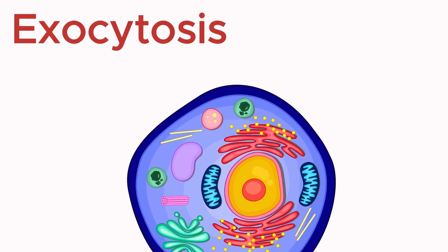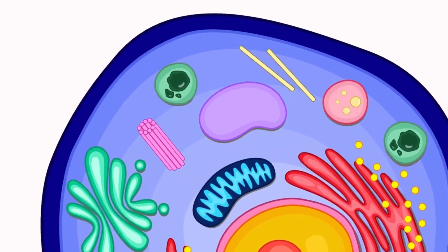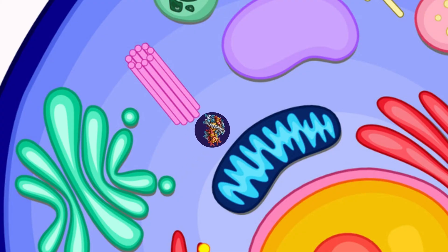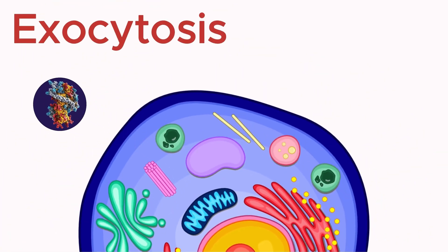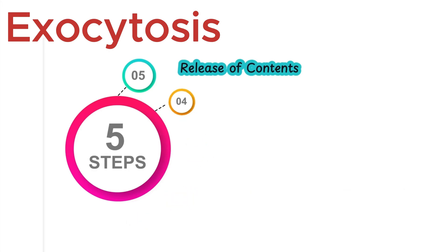For that, we need a cell, and then we need a material that needs to be transported out — it could be anything. Let's say this cell has synthesized a protein. The Golgi complex packs this protein into a package and transports it out of the cell. But it's not a simple process. Here are the stages of exocytosis — let's see them one by one.